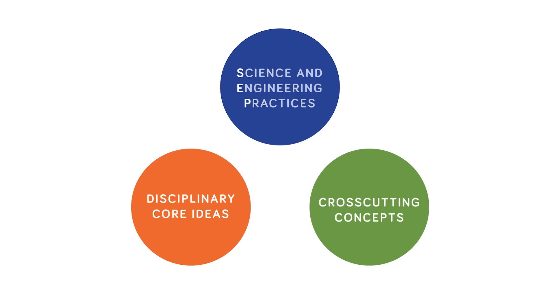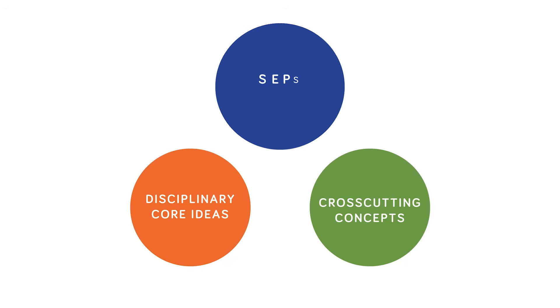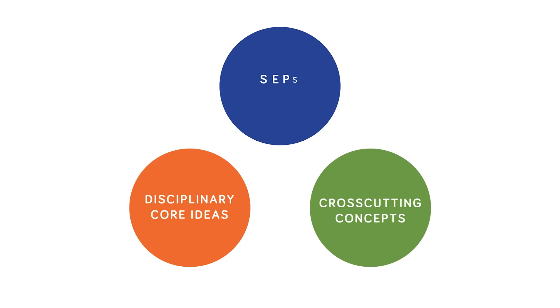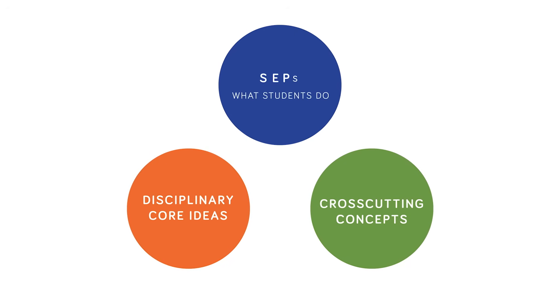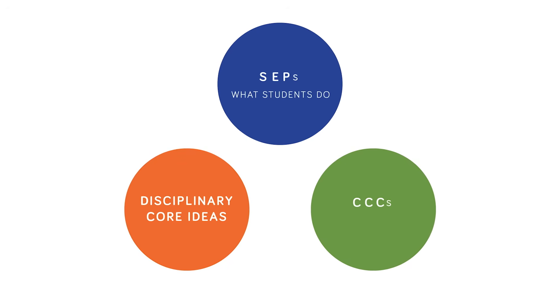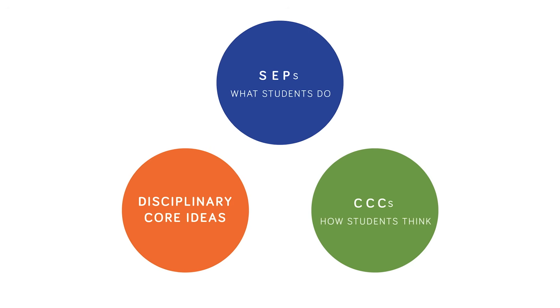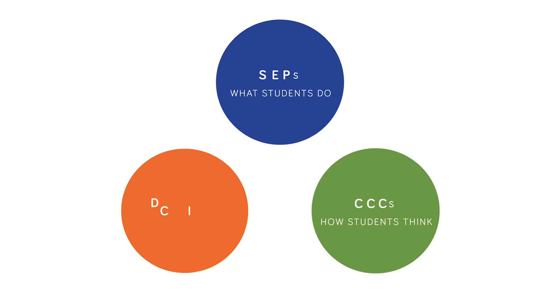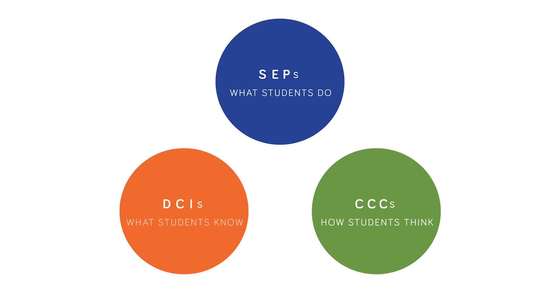With students at the center of 3D learning, SEPs can be thought of as what students do, CCCs as how students think, and DCIs as what students know.